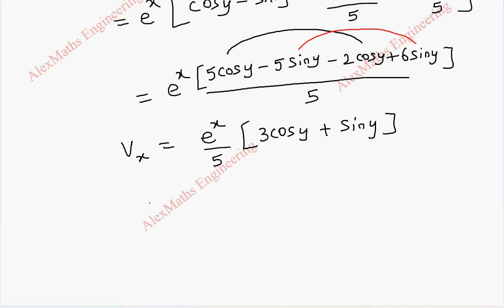We got vx, but we need vx of z comma 0. Substituting x equals z and y equals 0: e to the power z by 5, cos 0 is 1 giving 3, and sin 0 is 0. So vx of z comma 0 equals 3e to the power z by 5.